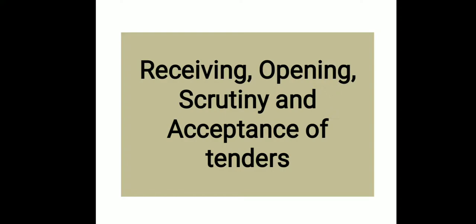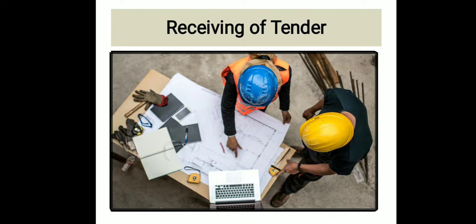Receiving of Tenders: After issue of tender documents to the contractor, the tender opening authority authorizes an officer to receive the tender. Tenders may be sent either by post, email, or put in the tender box kept for the purpose in the premises of the owner. Tenders placed in the tender box are locked and kept under the safe custody of the officer. The closing time for receipt of tenders should be kept after the normal times of delivery of the post. Tenders received after the due date and time are rejected.